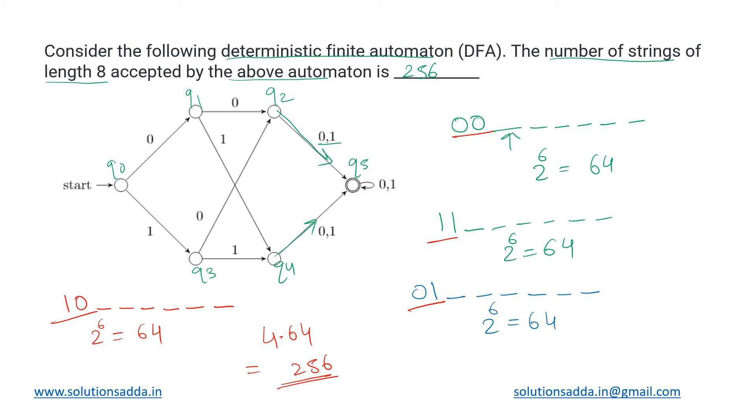It is giving us either zero or one, both are allowed, so we can actually merge these two states together. In the same way this q1 and q3 can be merged together. So this is not a minimal DFA, we can minimize it further and it will result into something like this. This DFA can be converted into...